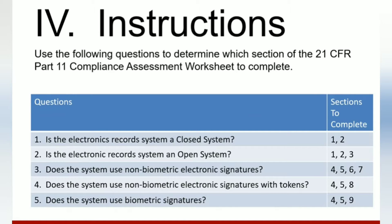The document gets very specific here with five questions answered yes or no that tell you which specific sections to complete — you will not do all nine sections. For electronic records for a closed system, go to sections one and two only. For electronic records for an open system, do sections one, two, and three. For non-biometric electronic signatures, do sections four, five, six, and seven. For non-biometric electronic signatures with tokens, do sections four, five, and eight. For biometric signatures, do sections four, five, and nine.